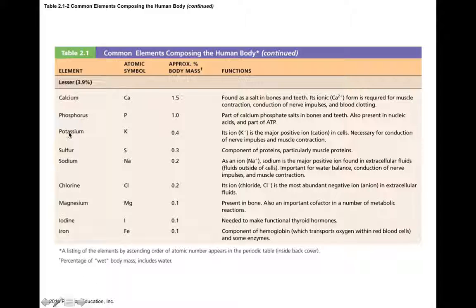Potassium, from the Latin kalium, is denoted as K. This is about 0.4% of our body mass. In its ionic state, it's necessary for conduction of nerve impulses and muscle contractions.